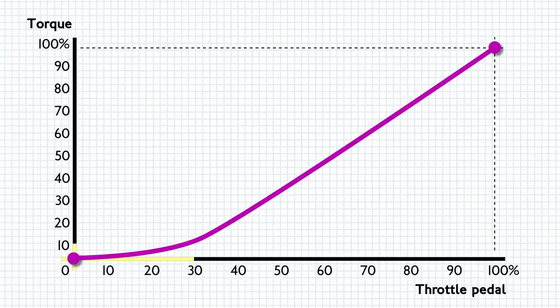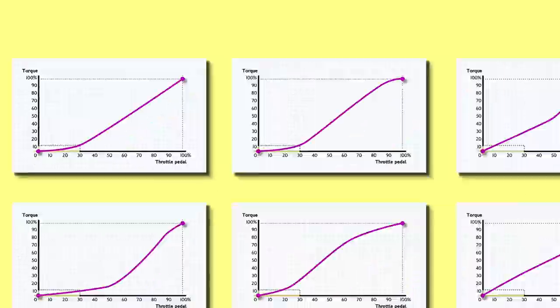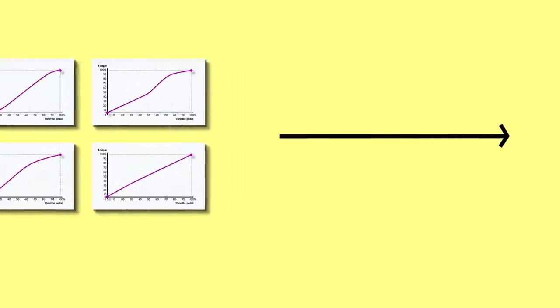So the engine map would have a shallower graph at first with maybe the first 30% of pedal travel giving you just 10% of the engine torque. This is one of many scenarios that feed into the driver demand torque map.